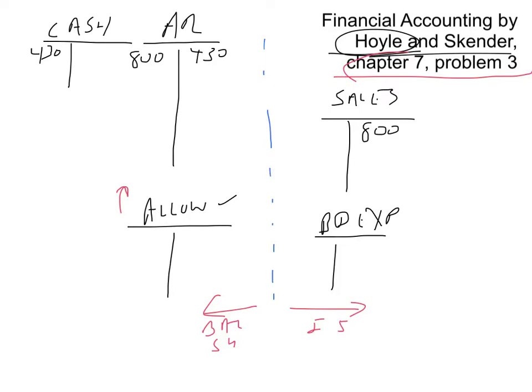Then comes the transaction that can cause problems: $31,000 of accounts are deemed uncollectable. You always make the same entry when an account is uncollectable — it never changes. You're not estimating bad debt expense here; you're writing accounts off as uncollectable. So you credit accounts receivable for $31,000 and debit the allowance account for $31,000. That same entry is always made: debit the allowance, credit accounts receivable, and then we get to the end of the year.